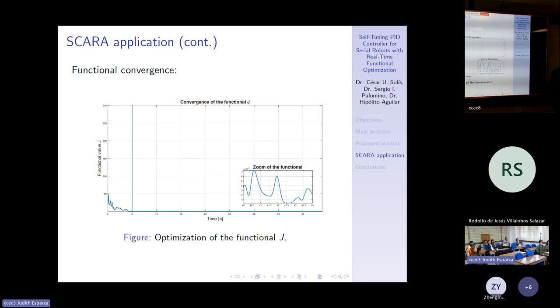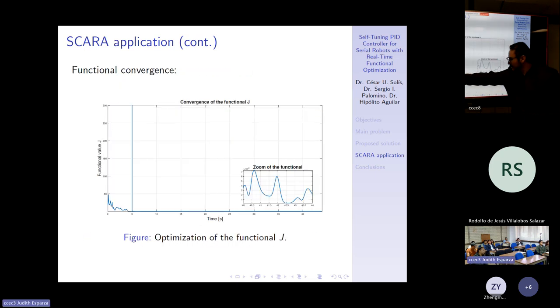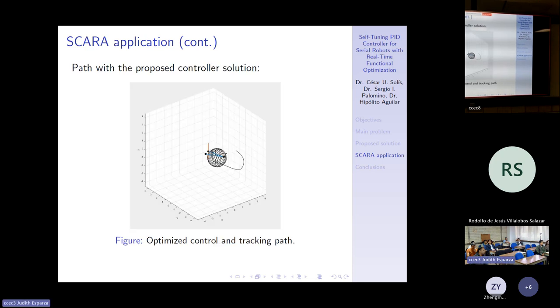The functional convergence. Remember, we are interested in optimizing a functional. Then, the functional is minimizing in the sense. Here is a spike. This is for equation 8 to transition to equation 9. Both returns. The controller makes a very small function. Then, it's optimizing.